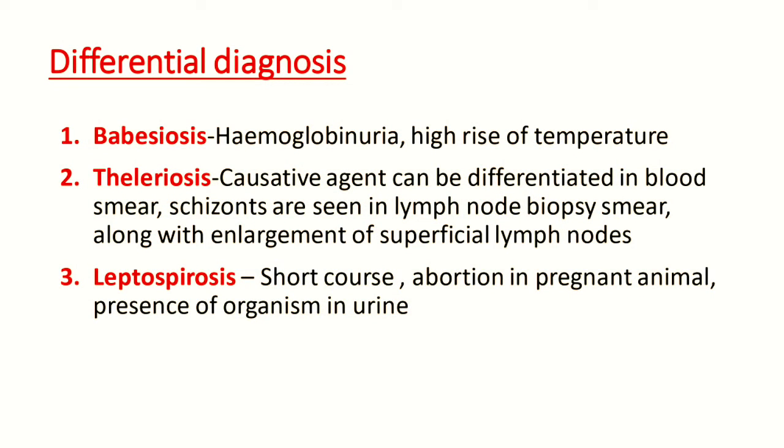Coming to differential diagnosis, anaplasmosis is often confused with diseases such as babesiosis, theileriosis, and leptospirosis. In babesiosis, there is hemoglobinuria and high rise of temperature. In theileriosis, the causative agent can be differentiated in blood smear, and schizonts are seen in lymph node biopsy smear along with enlargement of superficial lymph nodes. In leptospirosis, the fever is short, abortion is present in pregnant animals, and the organism is present in urine.